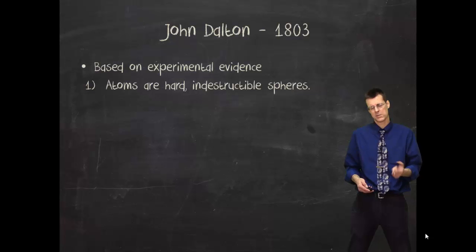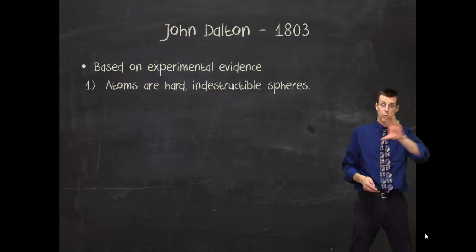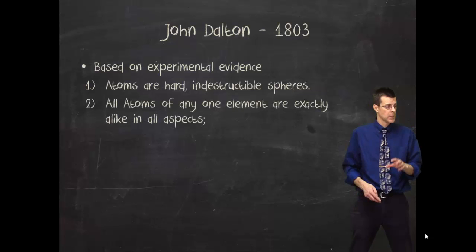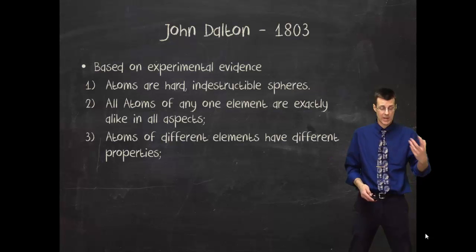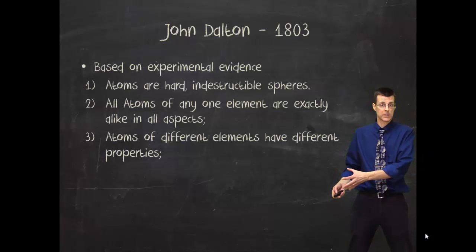He said that atoms were hard, indestructible spheres. We're almost back to Democritus, except for Dalton's now saying that all atoms are spheres. And that all atoms of one kind of atom are exactly alike in all respects. But then they're also going to be different from atoms of a different kind. So gold atoms are gold atoms, and every single gold atom is exactly the same. And oxygen atoms are oxygen atoms, and they're exactly the same in all respects. But they're different from gold.